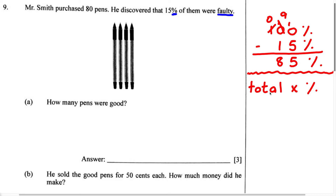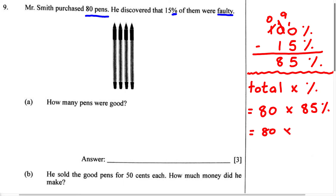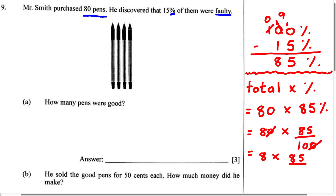The total number of pens is 80, because Mr. Smith purchased 80 pens. So we have 80 multiplied by 85%. We'll convert this percent to a fraction: 80 multiplied by 85 over 100. We know this zero can cancel out with that zero, leaving us with 8 multiplied by 85 over 10.